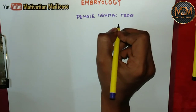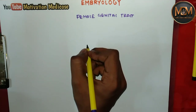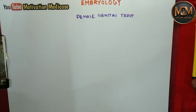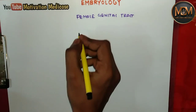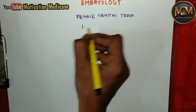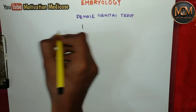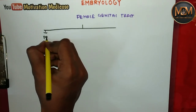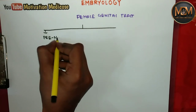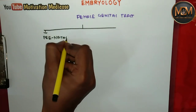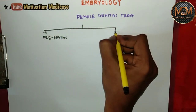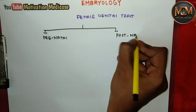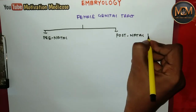It begins from fertilization and ends with the birth of the baby. This period is said to be prenatal development. We have two types of development: the first one is prenatal development, and the other one is postnatal development.